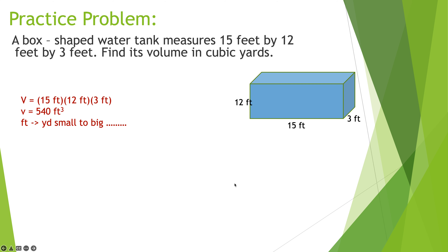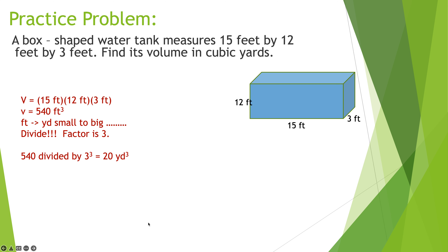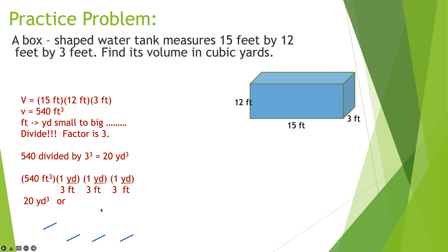The volume is 15 ft × 12 ft × 3 ft, which equals 540 cubic feet. Since I'm converting from feet to yards — smaller to bigger — I divide. The factor is 3 (3 feet per yard), but since it's cubic I divide by 3 three times, or equivalently by 3³ = 27. So 540 ÷ 27 = 20 cubic yards.